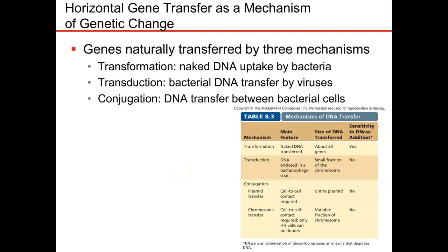Let's talk about the three major mechanisms of horizontal gene transfer that occur naturally in bacteria. The first is called transformation, where we transfer DNA as naked DNA from one cell to another cell. Transduction is the transfer of bacterial DNA using a bacteriophage, which is a virus. And conjugation is the transfer of DNA from one cell to another in the same generation using a sex pilus.